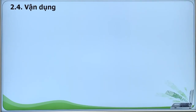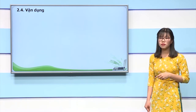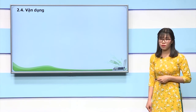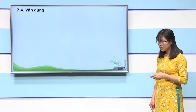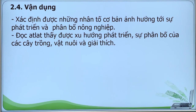Chúng ta đã ôn tập xong các kiến thức của nội dung ngành nông lâm ngư nghiệp. Để củng cố kiến thức này, cô và các em sẽ đi trả lời một số câu hỏi trắc nghiệm. Đối với ngành nông lâm ngư nghiệp thì các câu hỏi thường tập trung vào hai vấn đề: vấn đề thứ nhất là xác định được những nhân tố cơ bản ảnh hưởng tới sự phát triển và phân bố nông nghiệp; vấn đề thứ hai là đọc atlas để thấy được xu hướng phát triển, sự phân bố của các cây trồng, vật nuôi và giải thích.